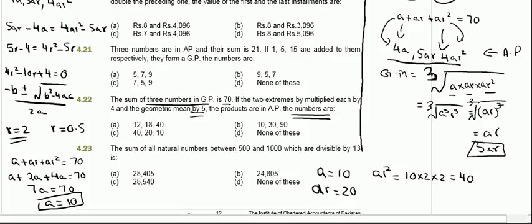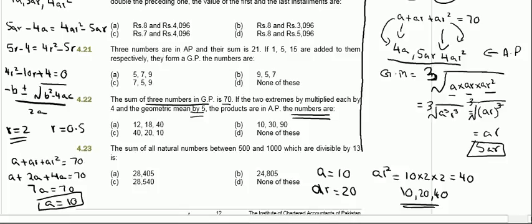However, looking at the possible answers for 4.22, there is no answer of 10, 20, 40 — although this is also a valid possibility. So we need to check the case where r equals 0.5.